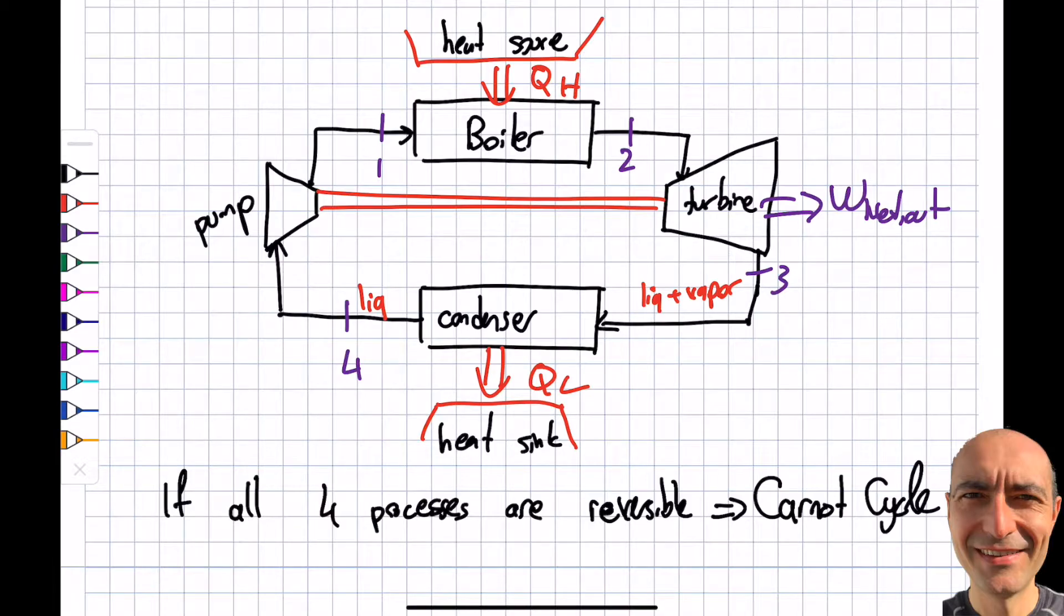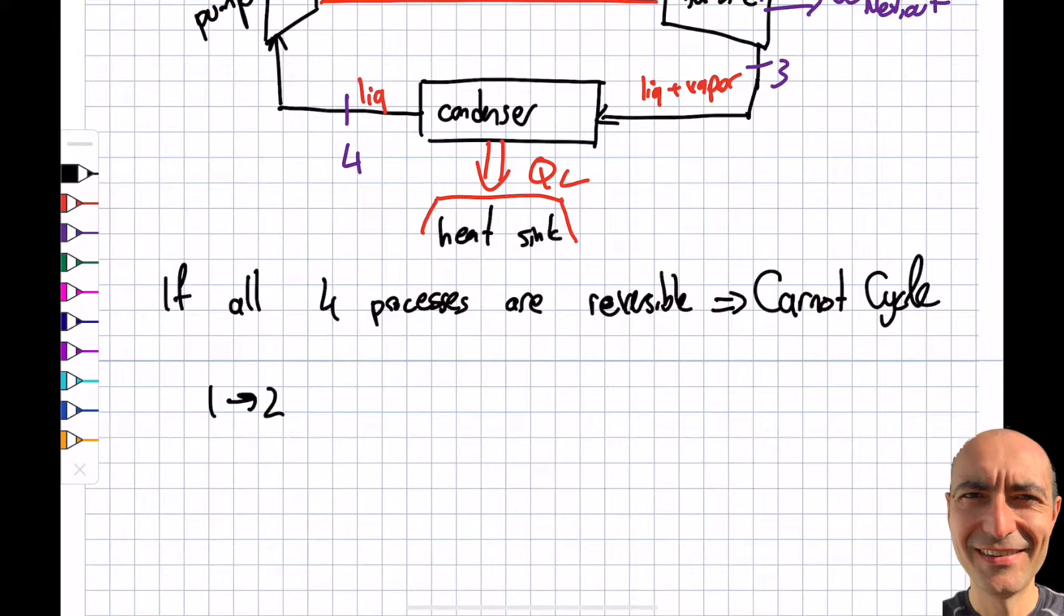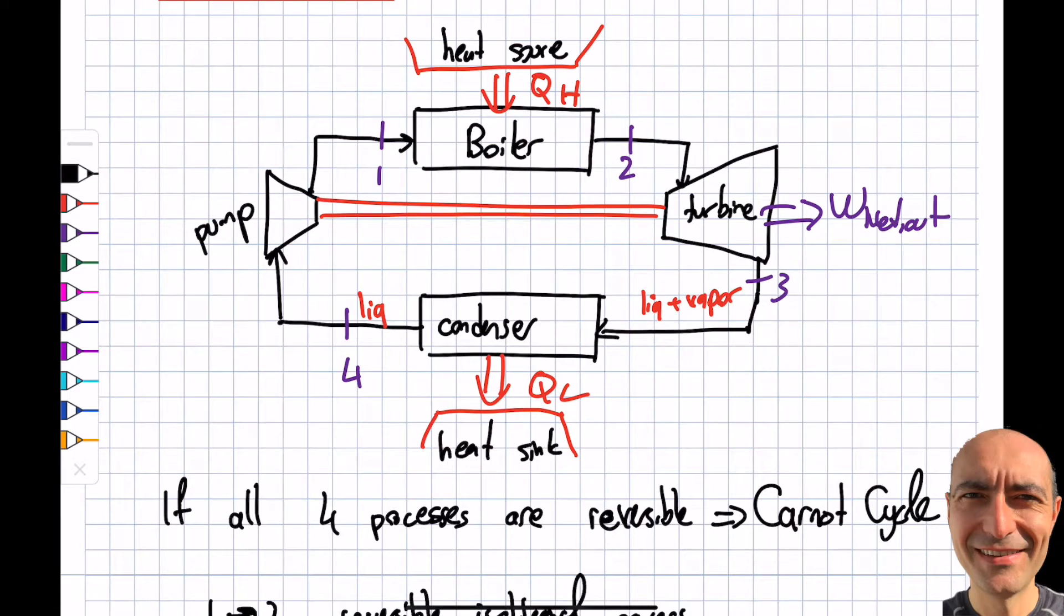In order for it to be reversible, what do I have to do? 1 to 2 needs to be reversible, which comes as no surprise. It needs to be isothermal. In this process, I have the heat source at TH plus delta TH, a very small difference between the temperature here and there. You can see it's isothermal, it keeps at TH all the time.